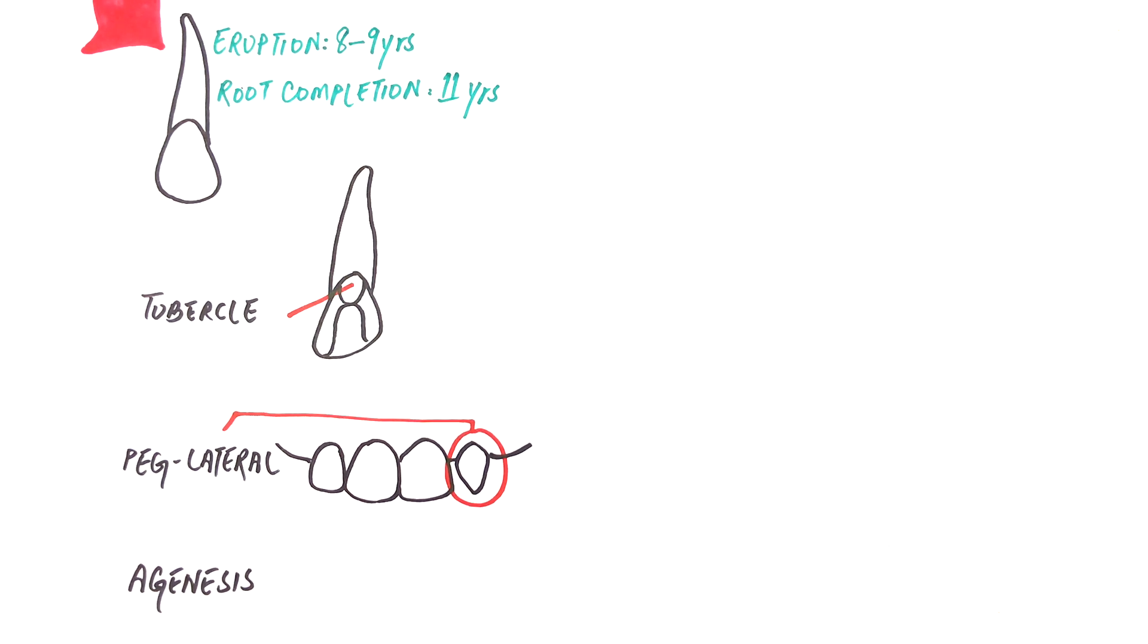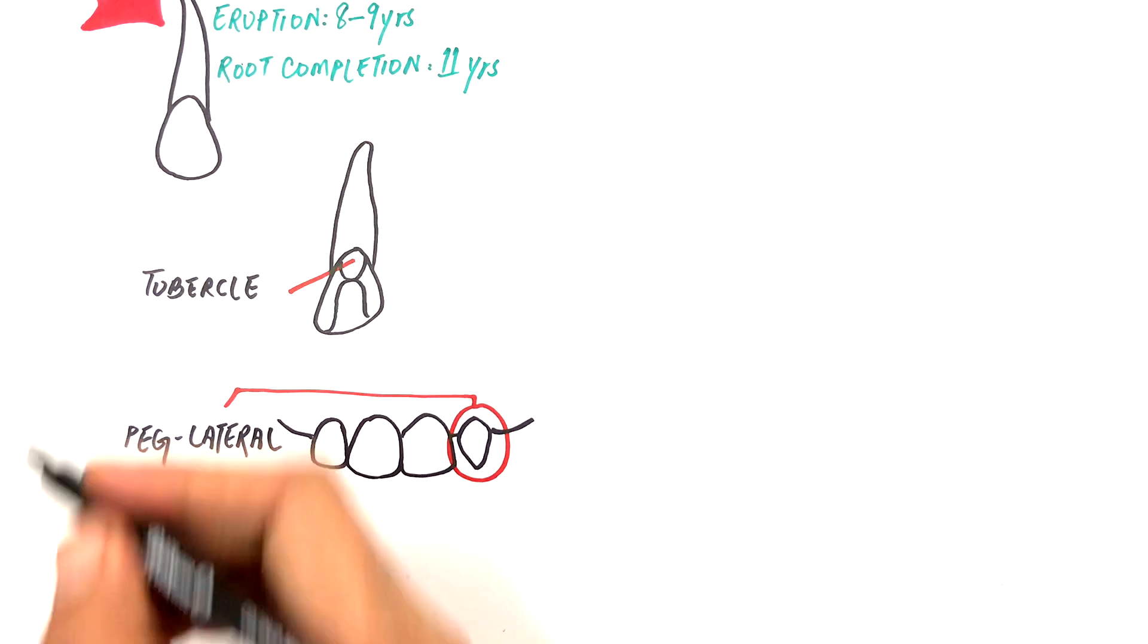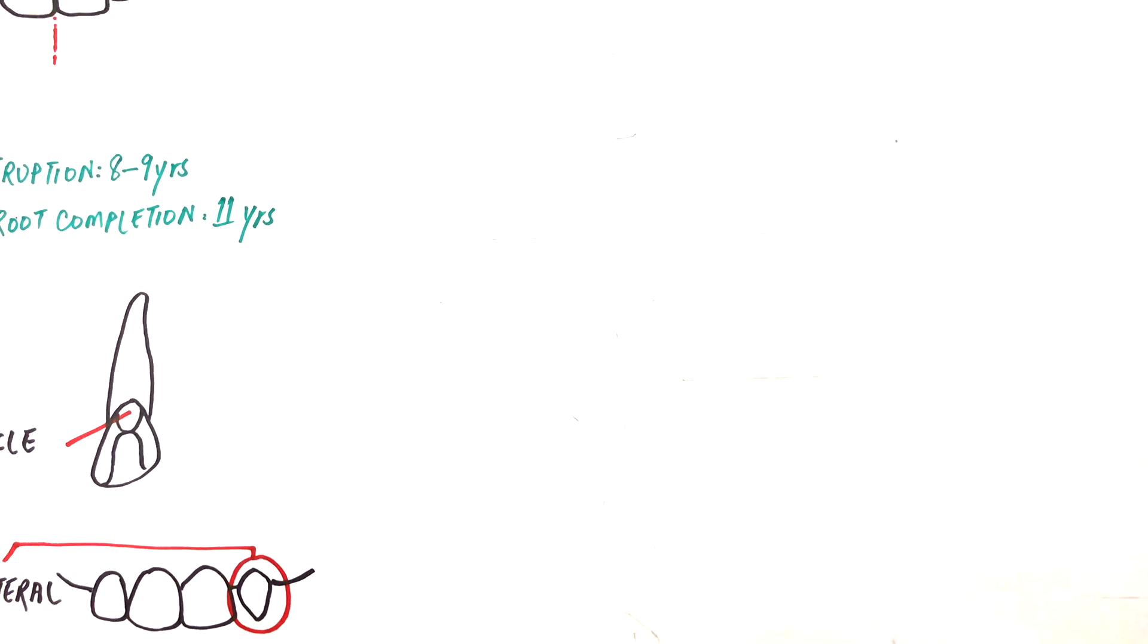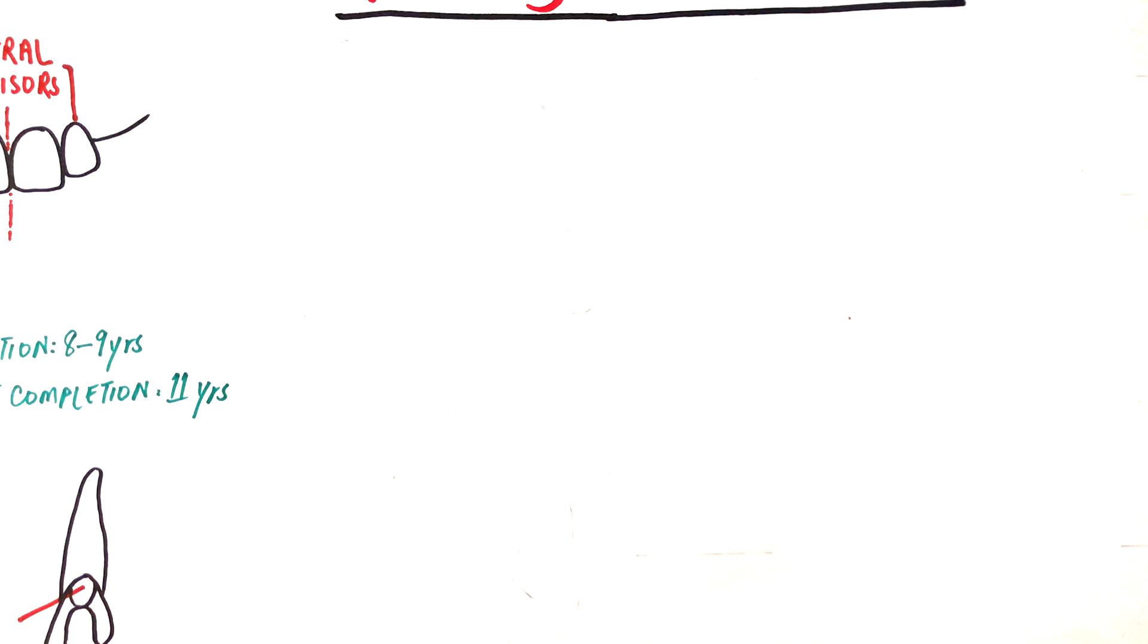The lateral incisor just like any other anterior teeth has four surfaces and an incisal edge. The surfaces are the labial or facial surface, the lingual surface, and the mesial and distal surfaces. Let's discuss each surface in some detail and in comparison with the maxillary central incisor.